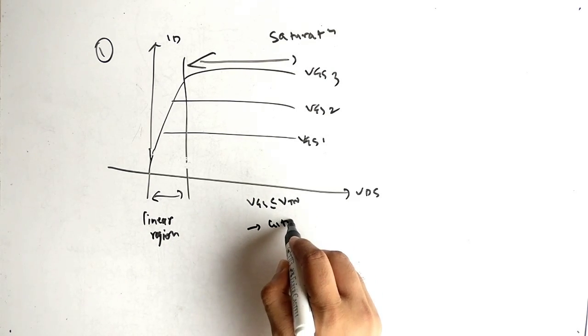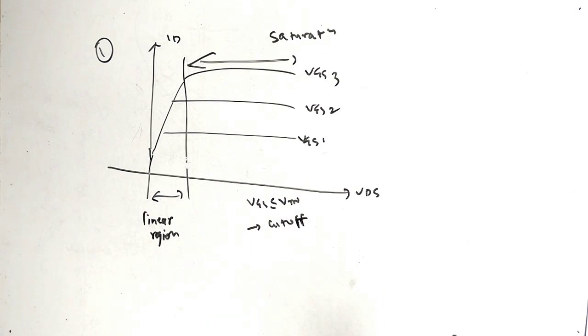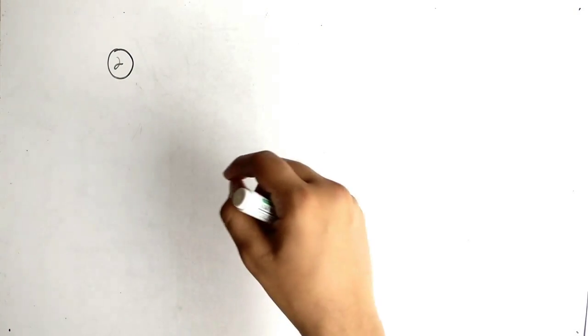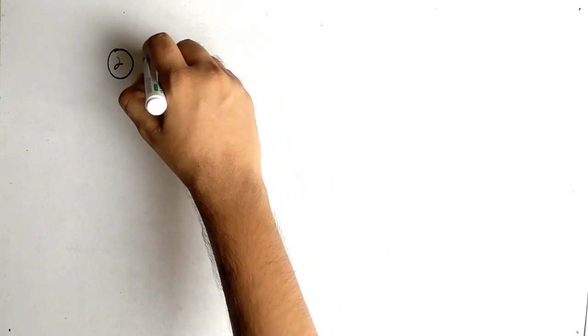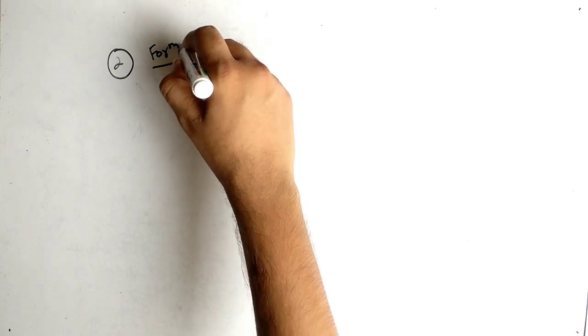Note carefully: the area where VGS is less than or equal to VTN represents the cutoff region.